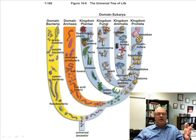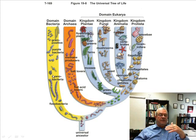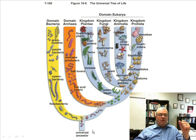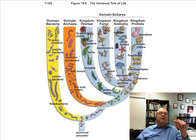If you go back far enough — going down the tree means going back in time — at some point you come to where the branches come together, which is the common ancestor of both animals and fungi. All things are related because if you go back far enough, according to this concept, the branches will come together. At the base of the tree is something called the universal ancestor — the ancestor of everything. All species are related by common ancestry and have developed by descent with modification.